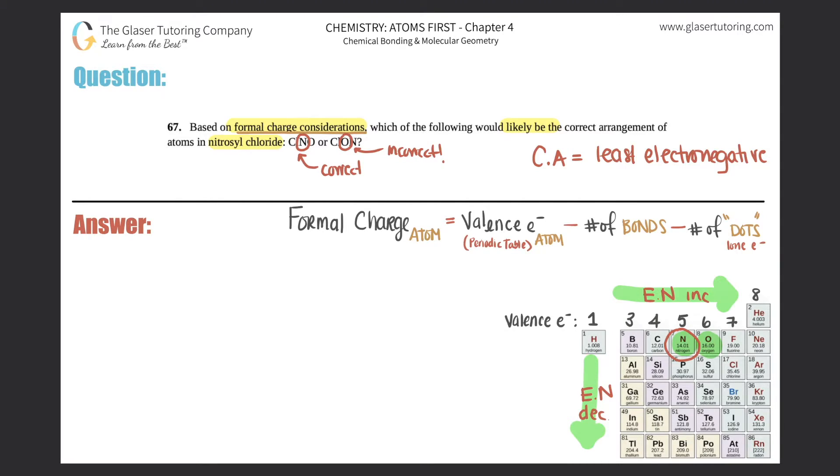That would be the easy way out, right? But they want us to do formal charges. So we're just going to write them out, do the formal charges. But you will also see that we get the same exact answer. I'm just going to erase this.